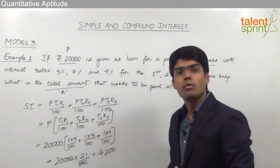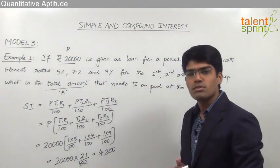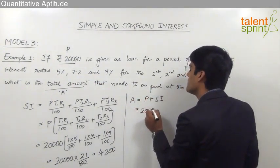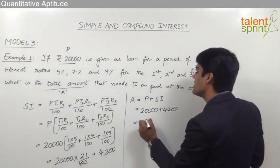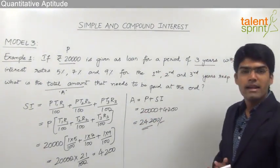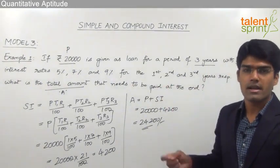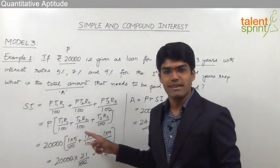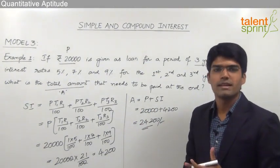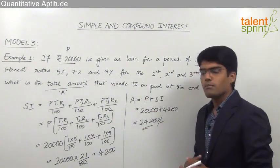The question asks for the total amount, which is principal plus interest: 20,000 + 4,200 = ₹24,200. One important point to note: the question does not specify whether this is simple interest or compound interest, but we have taken it as simple interest. The thumb rule is — if nothing is specified in the question, always take it as a simple interest case.